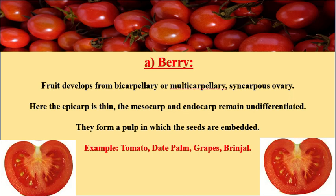Berry are fruits that develop from a bicarpellary or multicarpellary syncarpous ovary. Bicarpellary means the carpel number is two, and multicarpellary means the carpel number is many. In the cross section of a tomato, you can find two carpel regions — one carpel region and another carpel region — making it bicarpellary.